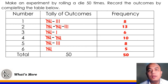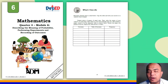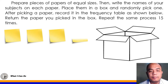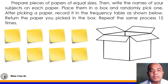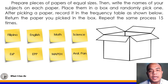This is only a sample result. You can perform your activity there at home if you want. This time, let's have the What I Can Do part of your module. Direction: Prepare pieces of papers of equal sizes — dapat yung mga papel na ipiprepare mo ay pareha ang sizes. Then write the names of your subjects on each paper: Filipino, English, Math, Science, ESP, EPP, MAPE, and Araling Panlipunan.